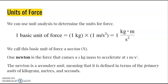Rearranging the equation, force equals mass times acceleration. Mass has units of kilograms and acceleration has units of meters per second squared, so one unit of force has units of kilograms times meters per second squared. This is cumbersome to write, so we redefine this quantity as one newton, abbreviated as N. One newton of force is the amount of force that causes a one-kilogram mass to accelerate at one meter per second squared. The newton is a secondary unit, made up of primary units: kilograms, meters, and seconds.